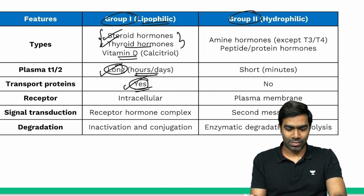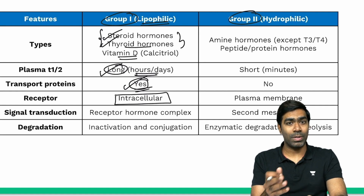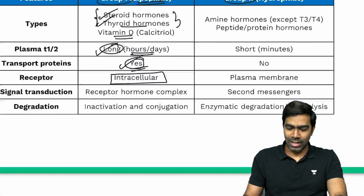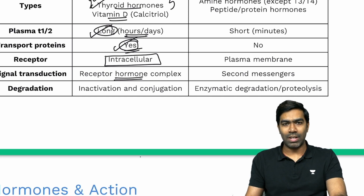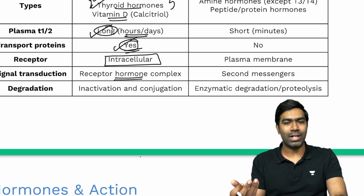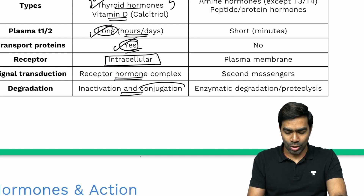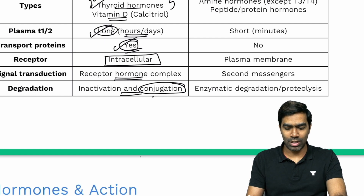Because lipophilic hormones can easily cross the cell membrane, their receptors are intracellular — either intracytoplasmic or intranuclear. Signal transduction occurs via a hormone-receptor complex that acts on a specific domain in the nucleus, increasing or decreasing transcription of the target gene. Degradation occurs by inactivation and conjugation, especially in the liver, where most steroids are inactivated.